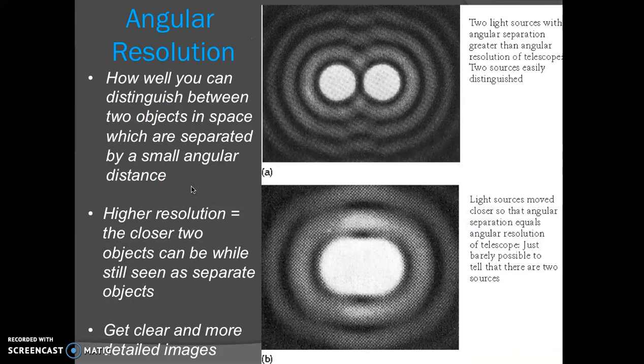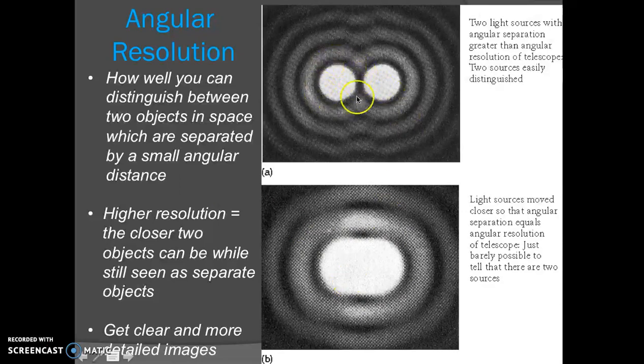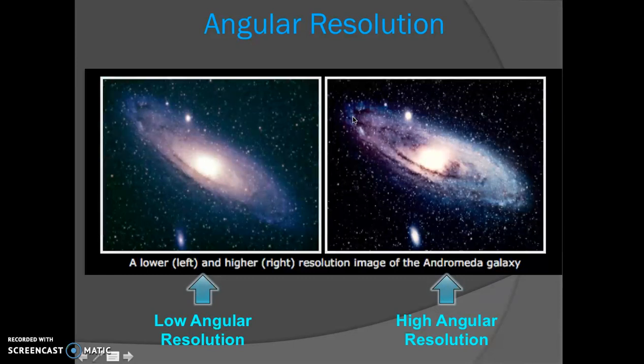The next thing we need to worry about in terms of telescopes is angular resolution, which is how well you can distinguish between two objects in space which are separated by a small angular diameter. We want to have high resolution telescopes, telescopes that can easily distinguish between two objects in the night sky. The higher resolution you have, the closer two objects can be while still being seen as separate objects. If you don't have high resolution, you might be trying to look at two stars and it looks something like this. But if you have high resolution, you're going to be able to distinguish between the two stars. High angular resolution gives you more clear and more detailed images. Here's an image of the Andromeda galaxy. On the left here we have lower angular resolution and on the right high angular resolution. With the high angular resolution we're more clearly able to distinguish between points of light, giving us much more clarity and detail within our image.